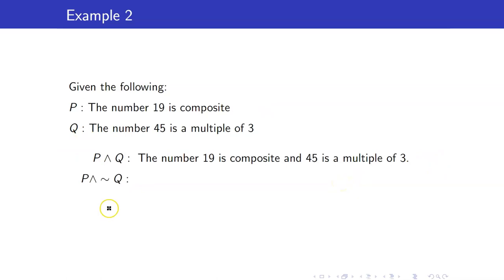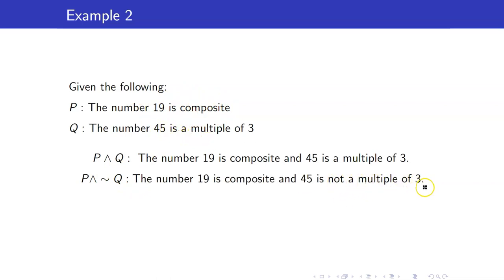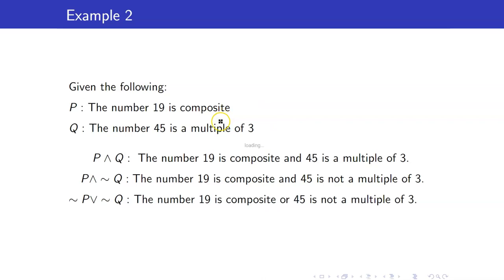Next, P and not Q: 'The number 19 is composite and the number 45 is not a multiple of 3.' P is already false, so automatically this is false. Next, not P or not Q: 'The number 19 is not composite or the number 45 is not a multiple of 3.' Not P is true because P is false. Not Q is false because Q is true. Since one true statement exists, this statement is true.